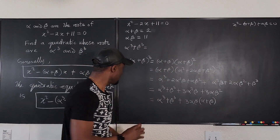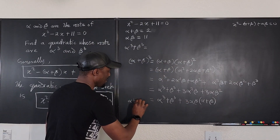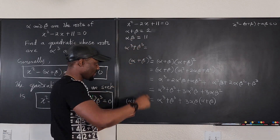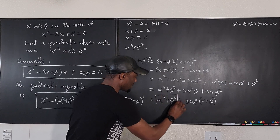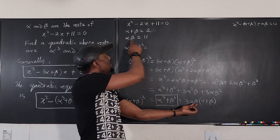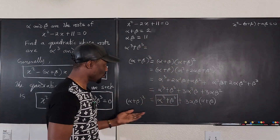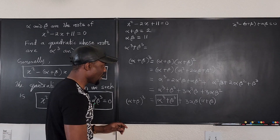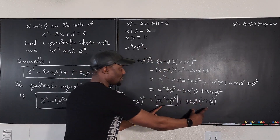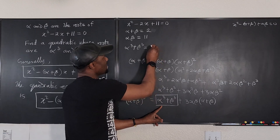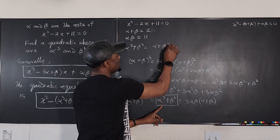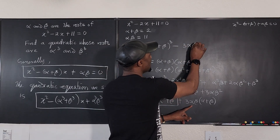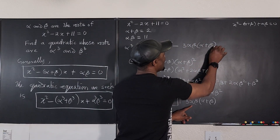We have alpha plus beta cubed on one side. Alpha beta we have it, alpha plus beta we have it. So we can easily find alpha cubed plus beta cubed by rearranging: alpha cubed plus beta cubed equals (alpha plus beta) cubed minus 3 alpha beta times (alpha plus beta). That's it.